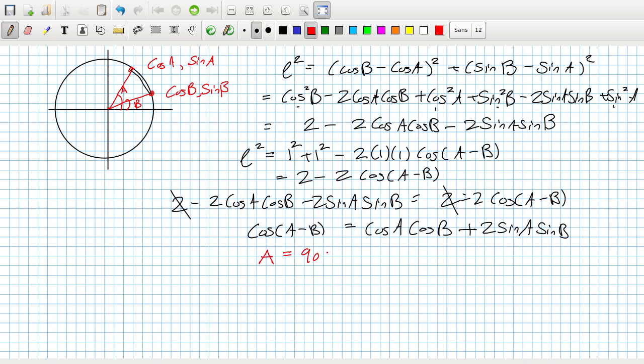So a substitution will do that for us. If we replace A with 90 degrees minus alpha and just to keep the letters the same, replace B with beta, so that would be cos(90° - α - β).